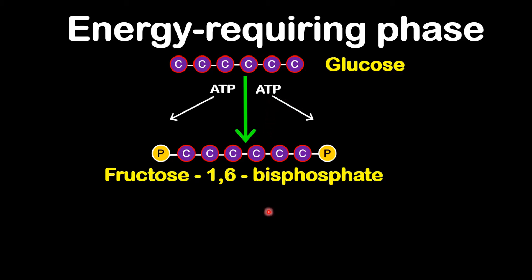ATP is adenosine triphosphate, meaning three phosphate groups. When energy is released from ATP, the molecules turn into ADP — adenosine diphosphate — which has two phosphate groups. The third phosphate from ATP is attached to the ends of the glucose molecule, turning it into fructose-1,6-bisphosphate, with phosphate groups at the first and sixth carbons.